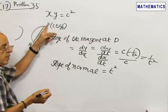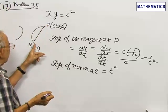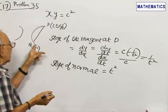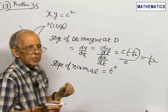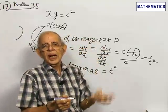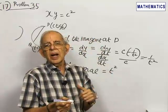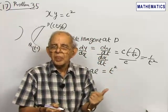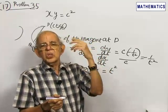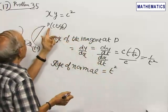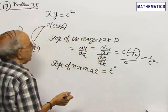But this normal is same as the chord PQ. So I can calculate the slope of PQ as the slope of the chord joining two points T and T dash.